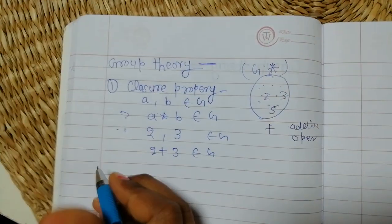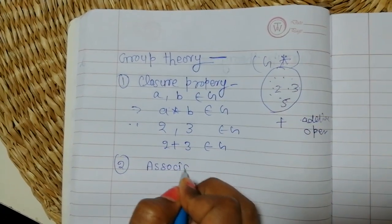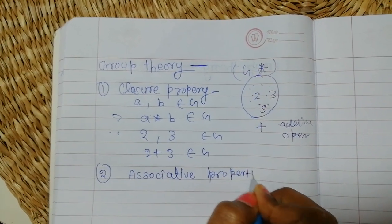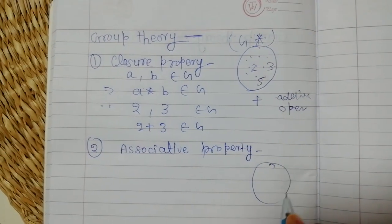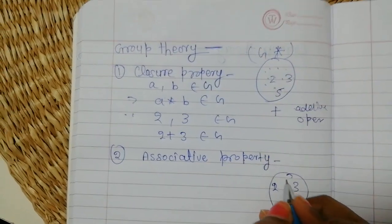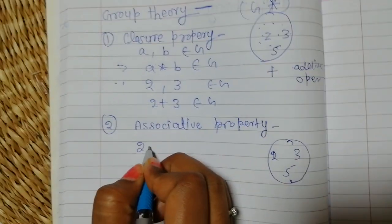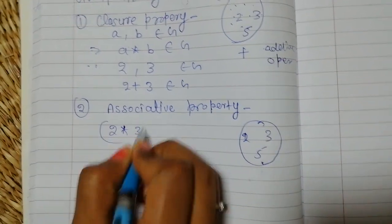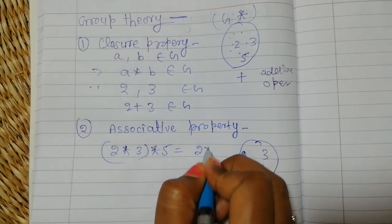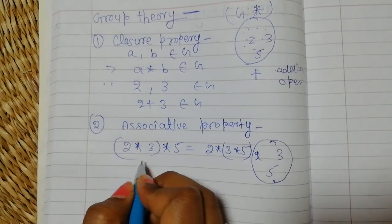Next property is associative property. In this property we take three elements: two, three, five. We operate them as two star three, star five — it must be equal to two star, three star five. Like this.